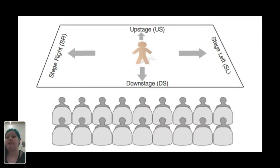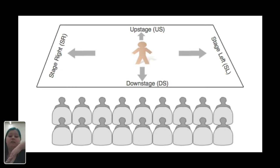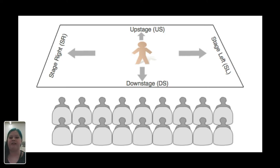Now that we know the different types of stages, we'll learn stage directions, starting with upstage and downstage. Historically, stages were not always flat — the back part would be higher than the front. Nowadays most stages are flat, but we still use these terms. Upstage is the back part of the stage, and downstage is the front part of the stage, towards the audience.